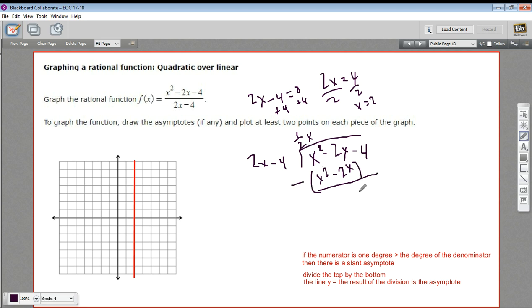So we subtract. And we've got nothing. And we could bring down this negative 4, but that's going to be our remainder because you can't multiply anything by 2x to get a negative 4. So this is our remainder. This is the equation for the line. Well, y equals that is the equation for the line. So y equals 1 half x is our slant asymptote.